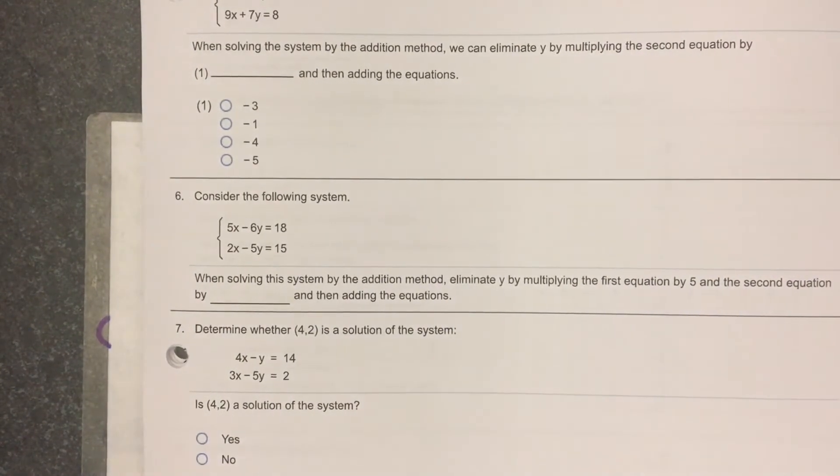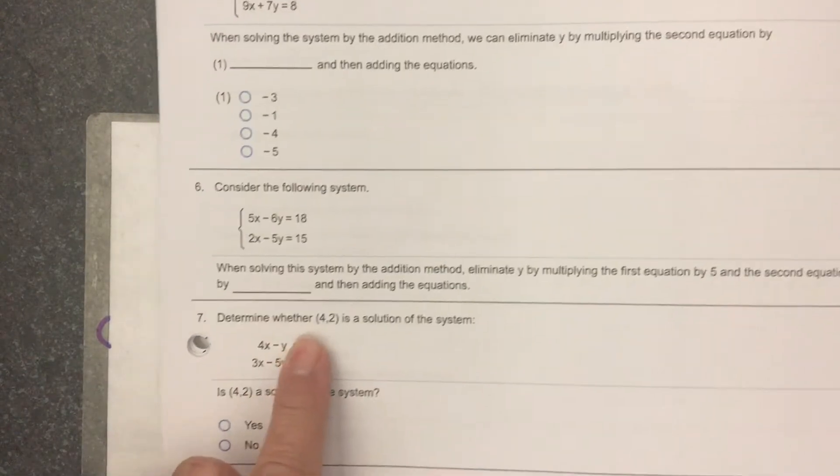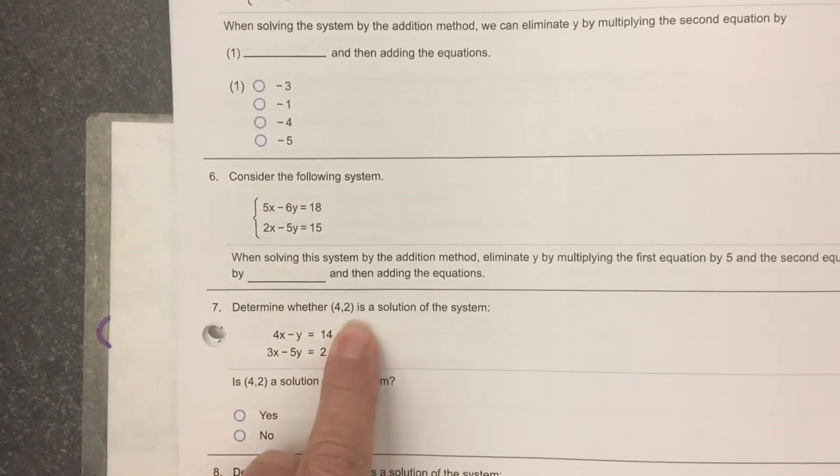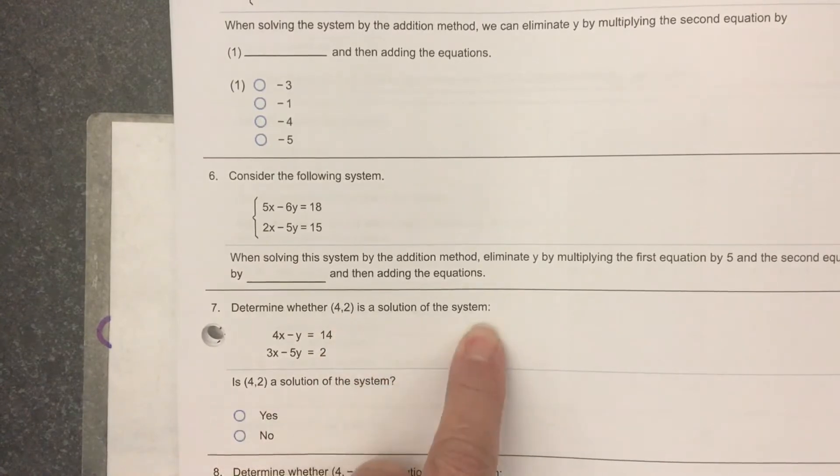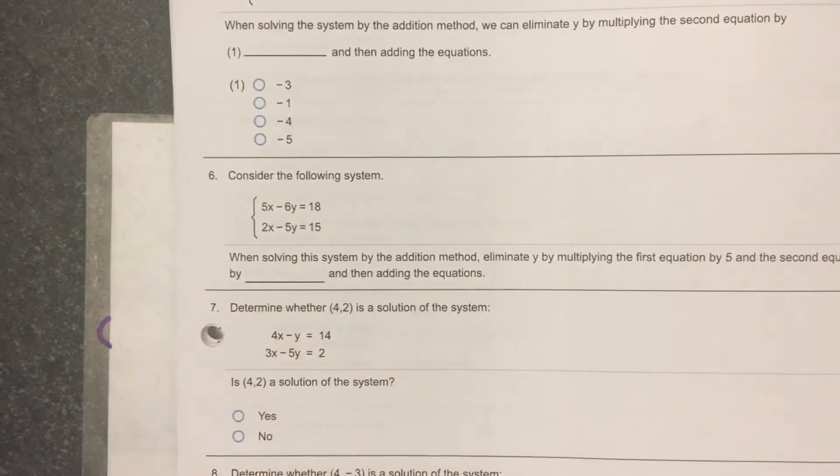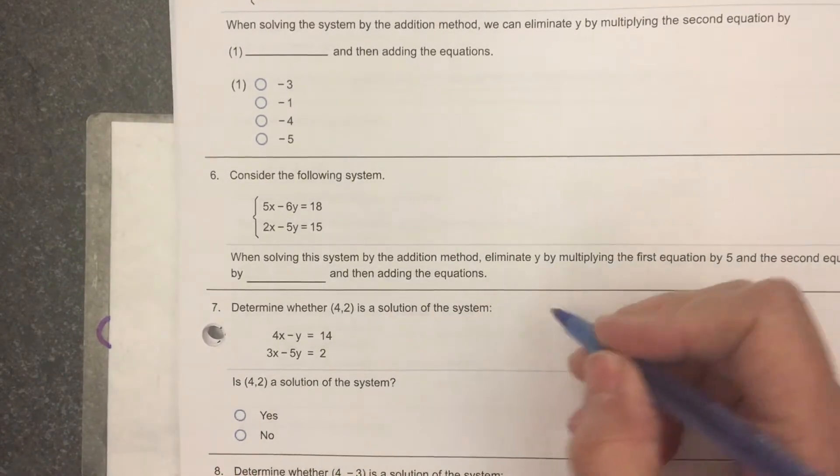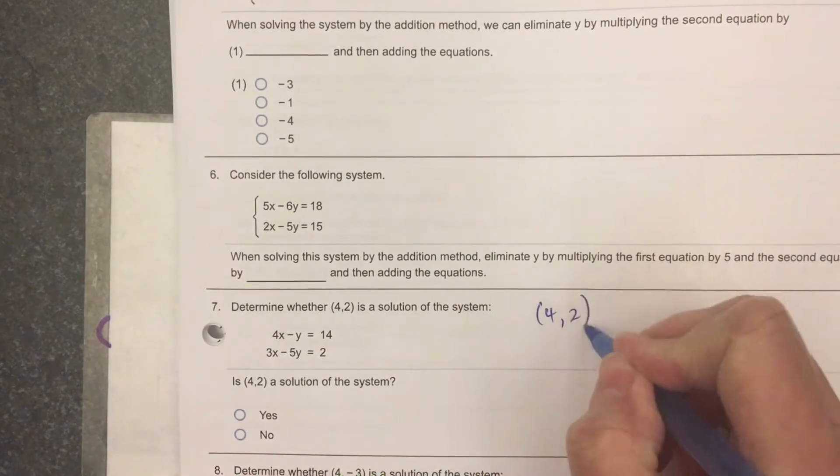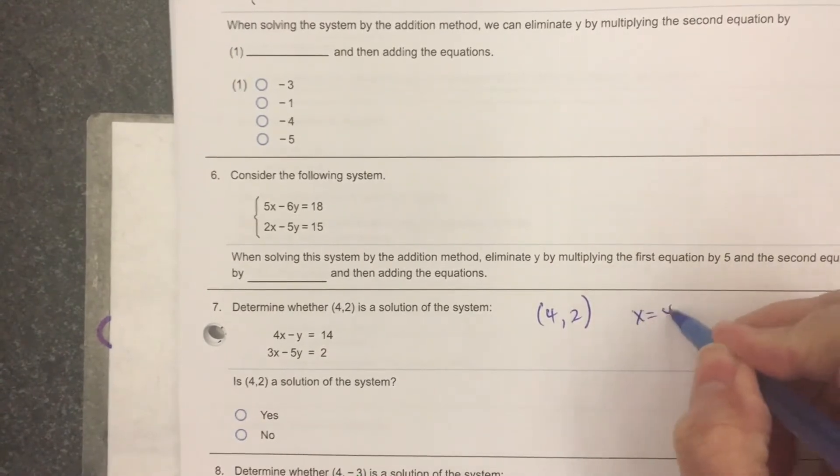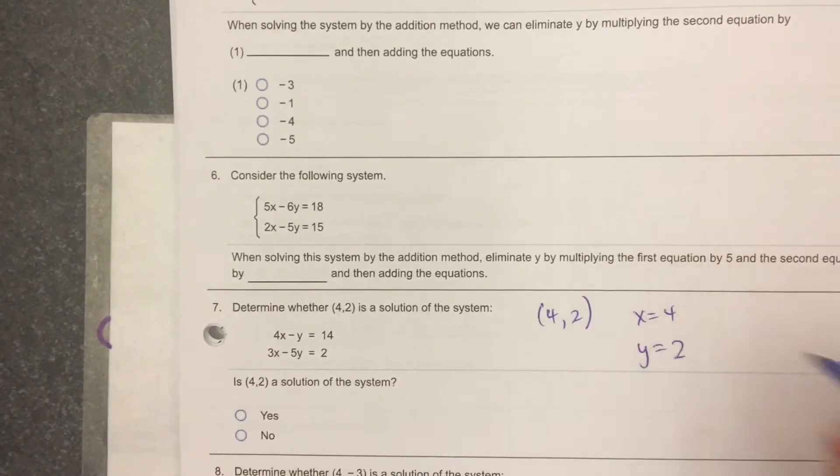We'll work problem number 7 from 7.3, determine whether 4 comma 2 is a solution of the system. So they've given me an ordered pair, 4 comma 2, x equals 4 and y equals 2.